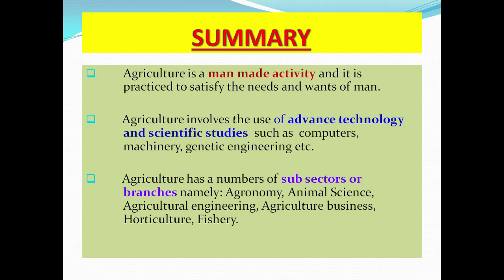In summary: agriculture is a man-made activity practiced to satisfy the needs and wants of man. It was created around 2000 BC by the Greeks, when it was primitive. Now it is advanced. Key differences between primitive and modern agriculture include the technologies used, the level of farming — subsistence versus commercial — and the types of produce cultivated.